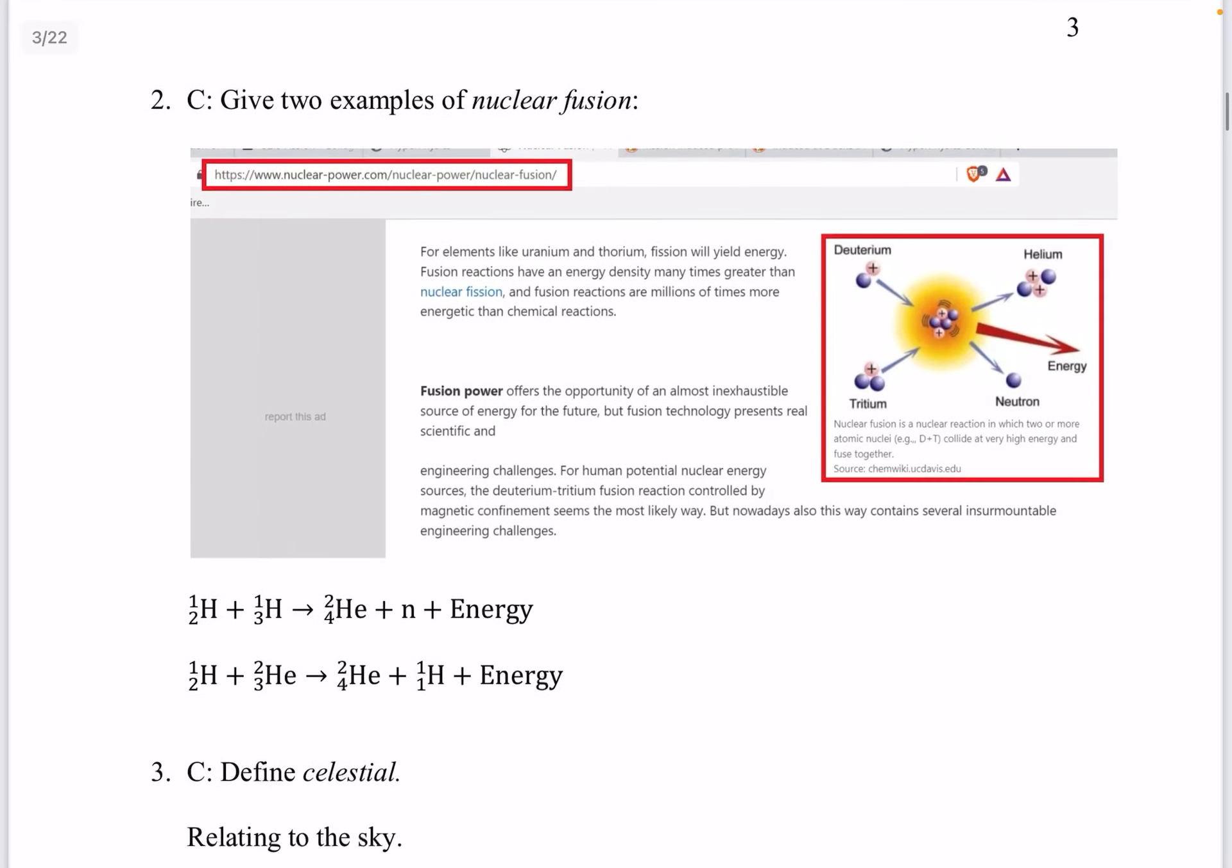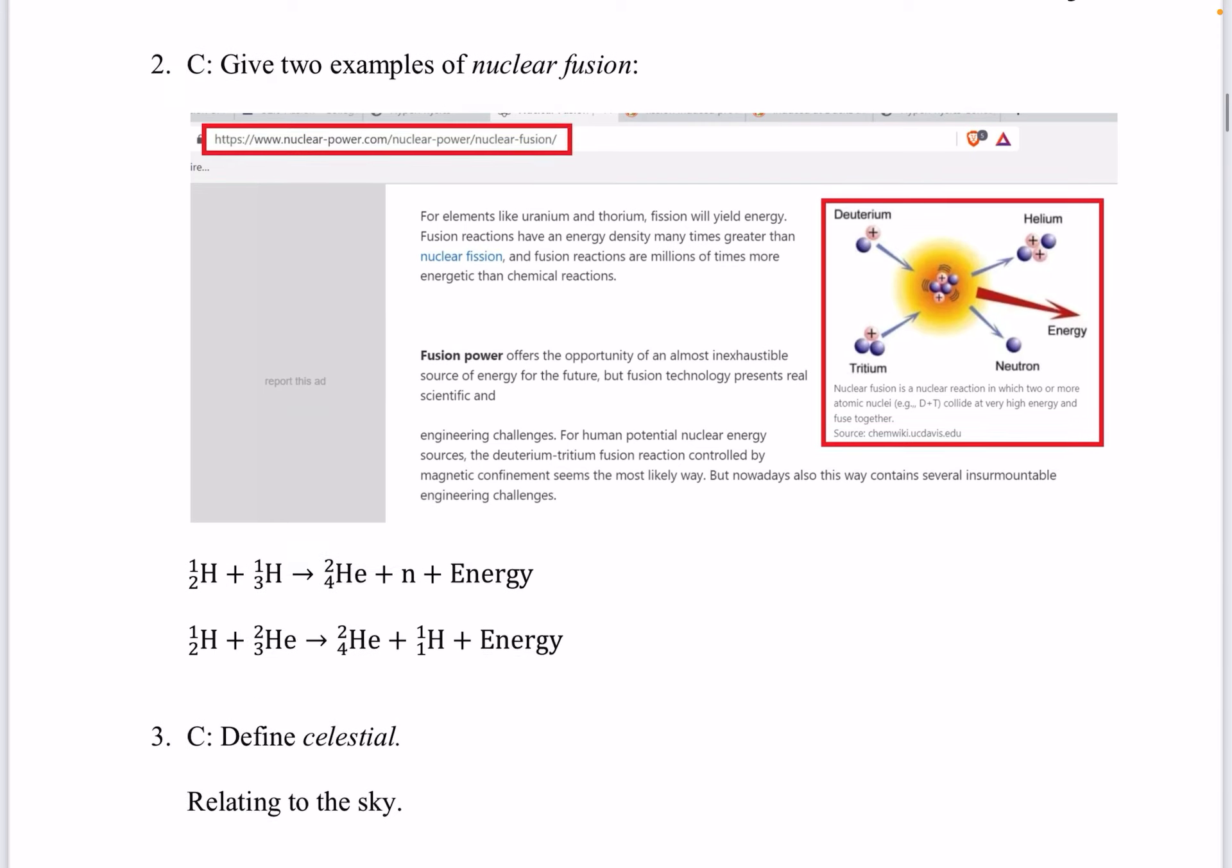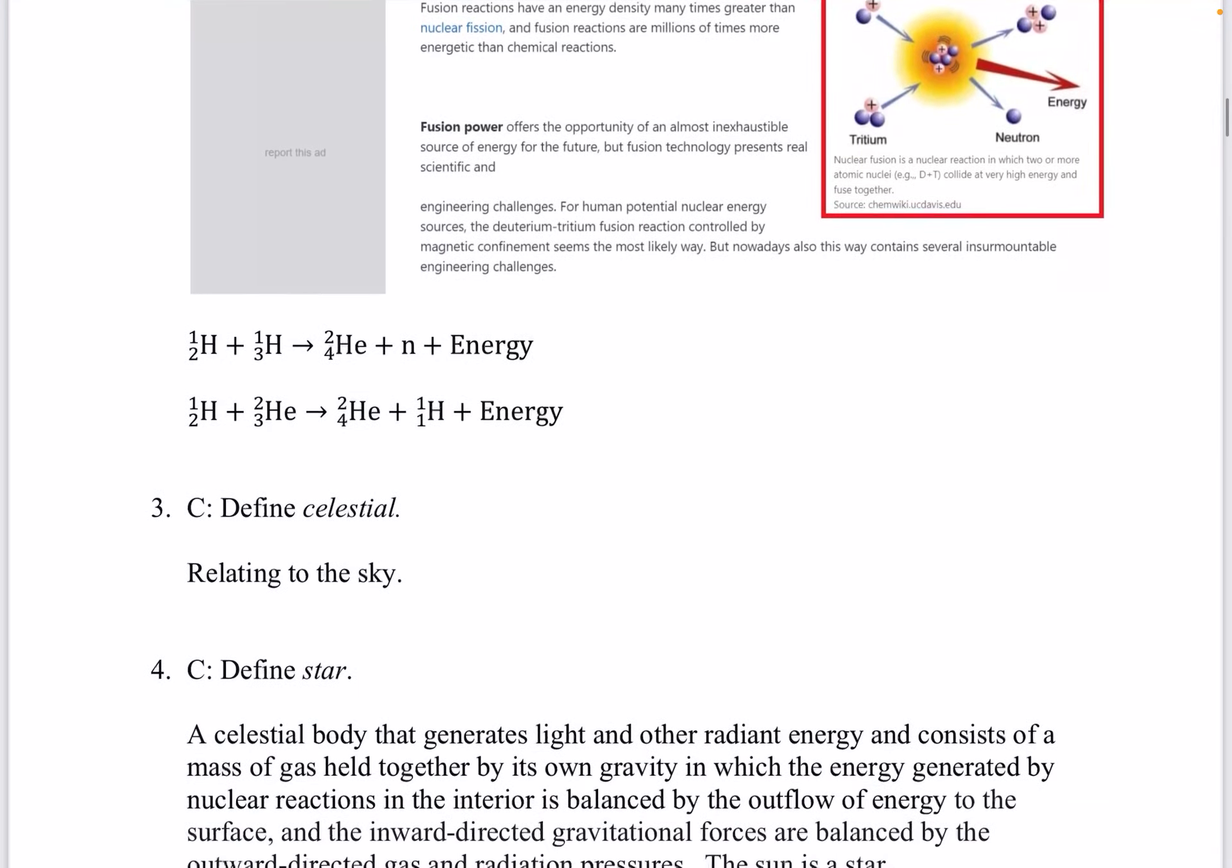Question 2. Give two examples of nuclear fusion. Once again, please do go to this website, nuclearpower.com. It's pretty well organized. We got hydrogen plus hydrogen becoming helium plus a neutron plus energy. We also have hydrogen plus helium becoming helium plus hydrogen plus energy.